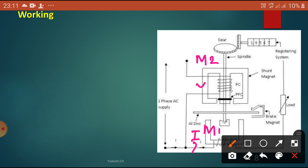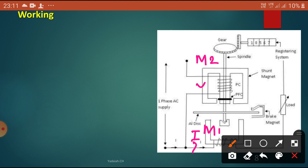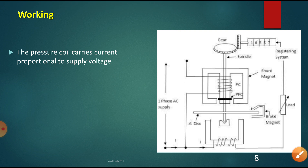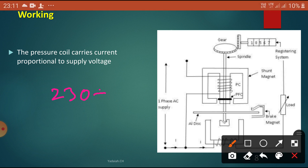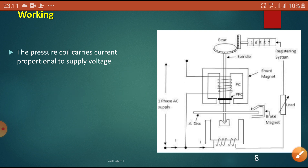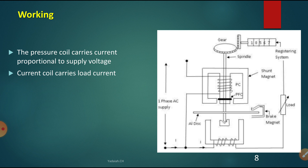The pressure coil carries the current proportional to the supply voltage. The single-phase supply is 230 volts plus or minus 10 percent. If the voltage is more, more flux is produced; if voltage is less, less flux is produced — it is dependent on the supply voltage. Next, the current coil carries the load current.